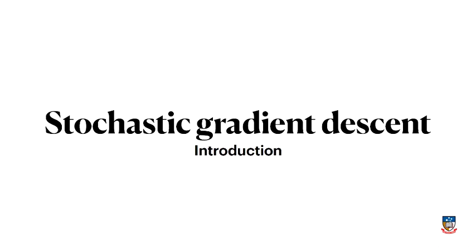We come to a couple of videos on perhaps one of the most important topics in this course in terms of modern machine learning, which is stochastic gradient descent. This is a gradient descent method that's completely different to the deterministic methods we've talked about before, in that it uses randomness. You can imagine a gradient descent algorithm that's somehow randomly walking down the surface of a cost function towards the minimizer.